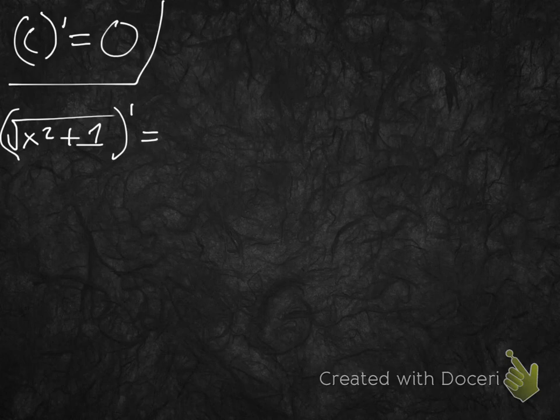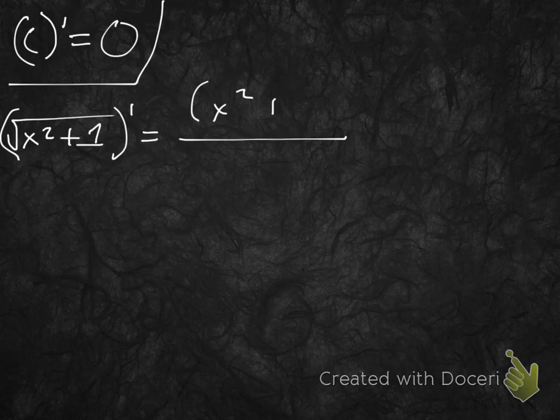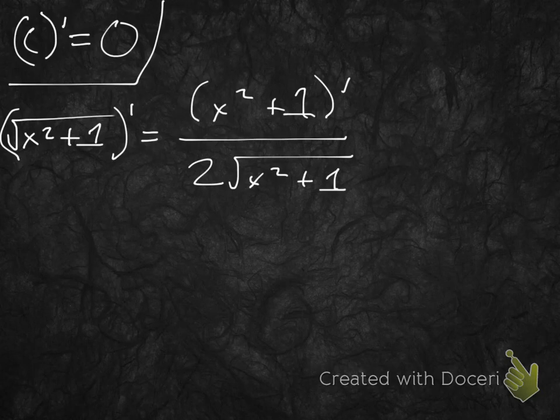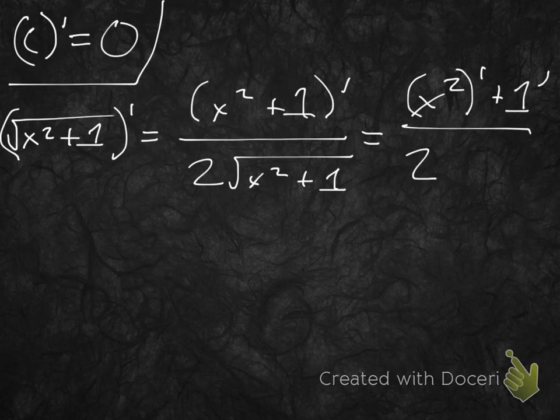and we're going to end up with x squared plus 1 prime over 2 times x squared plus 1 radical. And then we'll differentiate this sum by term. So we're going to get x squared prime plus 1 prime over 2 times radical x squared plus 1.